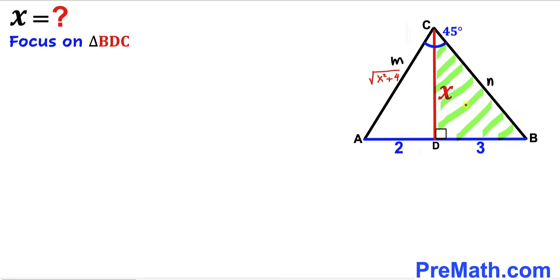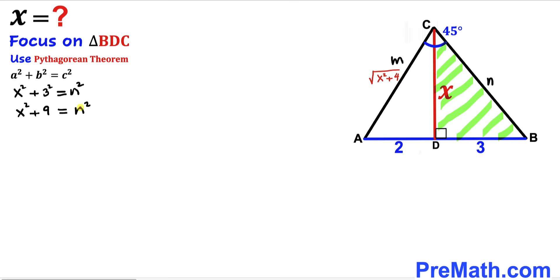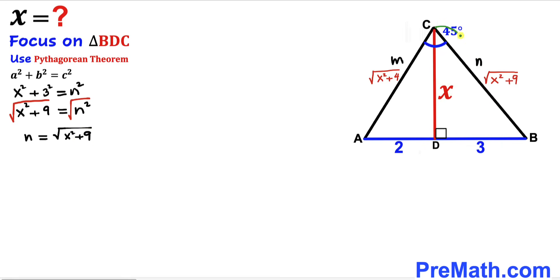Now let's focus on right triangle BDC and apply the Pythagorean theorem as well. Our hypotenuse is n, and our two other legs are 3 and x. So we get x² + 3² = n², which gives us n = √(x² + 9). So side BC equals √(x² + 9).